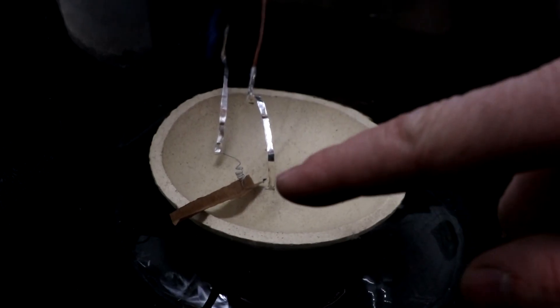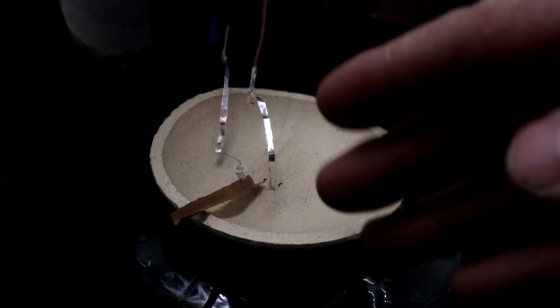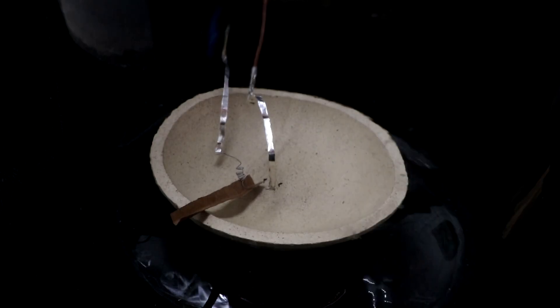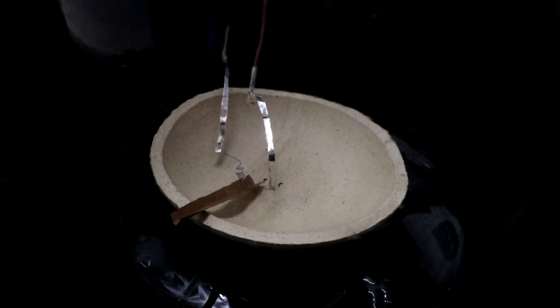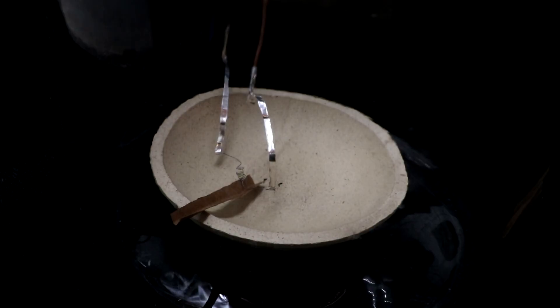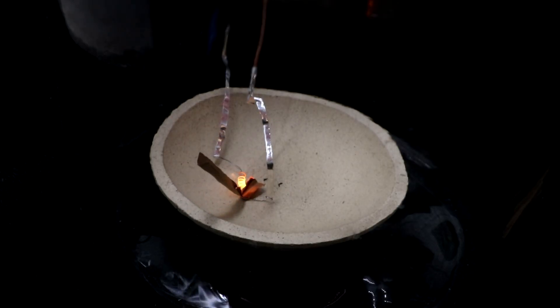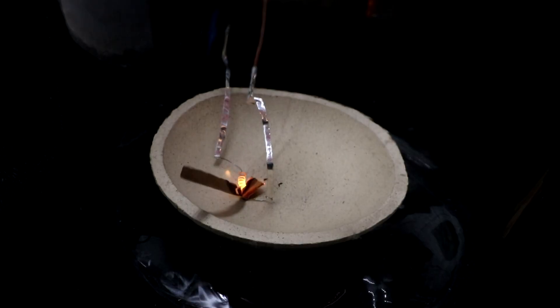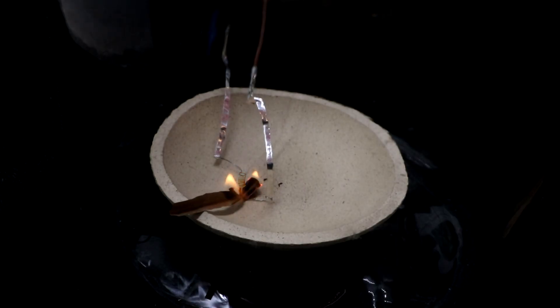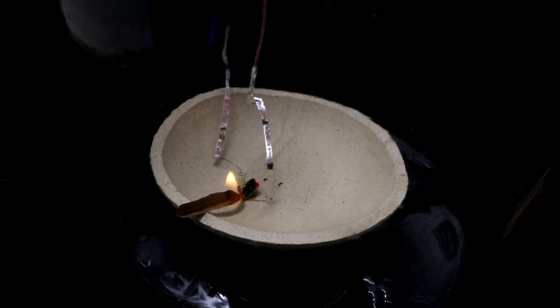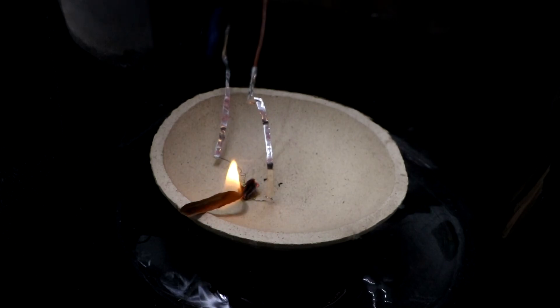Here we are, first control. This is just normal atmospheric composition at ambient pressure. We're going to run the ignition coil, get it hot and ignite it. And we have a little fire going. Very nice. That's just how the paper burns normally.